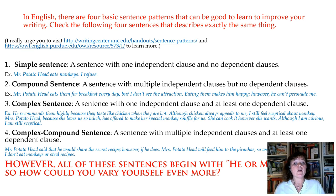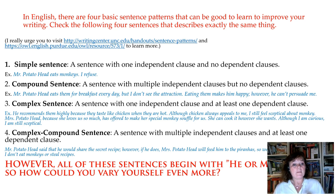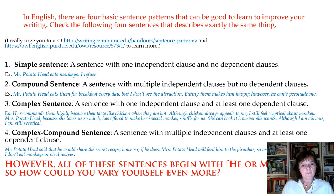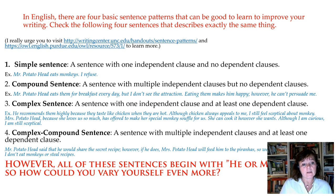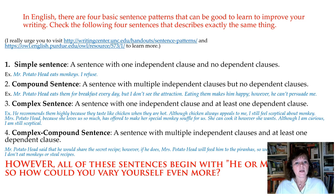For a complex sentence, 'he' — that is Mr. Potato Head — 'recommends them highly because they taste like chicken when they are hot.' Then: 'although chicken always appeals to me, I still feel skeptical about monkey.' And then Mrs. Potato Head is included: 'Mrs. Potato Head, because she loves us so much, has offered to make a special monkey soufflé for us. She can cook it however she wants.'